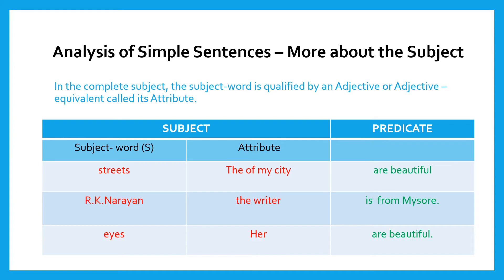Moving further, I would like to draw your attention to understand more about the subject. The subject word is also qualified by an adjective or adjective equivalent called an attribute. For example, 'The streets of my city' — 'streets' is the subject word, and 'the of my city' is the attribute. Similarly, 'R.K. Narayan, the writer' — R.K. Narayan is the subject word and 'the writer' is the attribute.